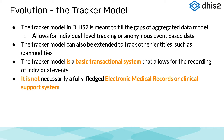This module is meant to fill the gaps of the aggregated data model and allow for individual level tracking or collection of anonymous event-based data. A lot of the time we talk about tracking an individual that we are providing services to, but it's important to note that we are tracking an entity, which means it doesn't have to be a person. It could be a commodity — for example, stock of ready-to-use therapeutic food in a nutrition program, or insecticide-treated bed nets that are distributed through an antenatal care program.